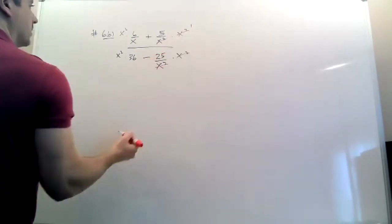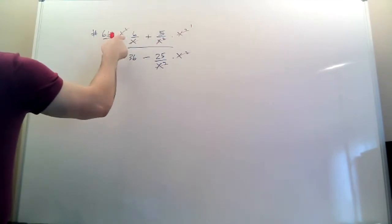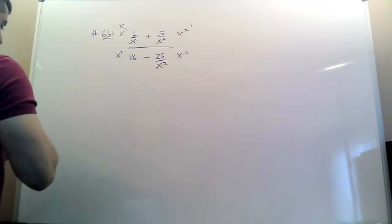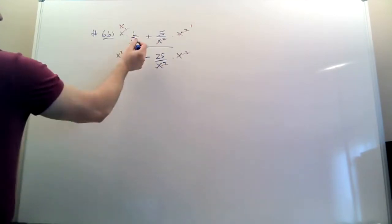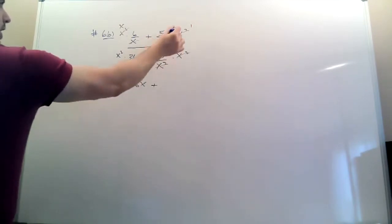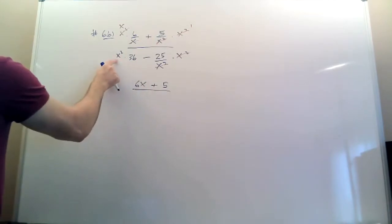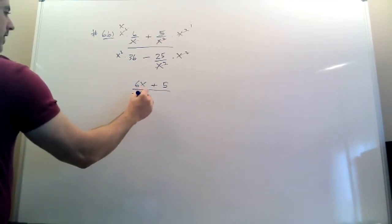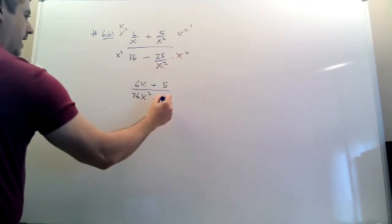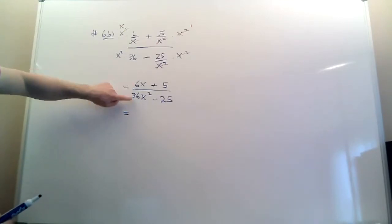Here they cross out. Here there's nothing to cross out. This x crosses out one of those — there's two and there's one, so you're left with one after crossing out. On top, this six and that x hook up, the plus stays, that x squared is gone. Five times one is five. On top you get 36 times x squared, the minus stays, and those crossed out because you divided them away.